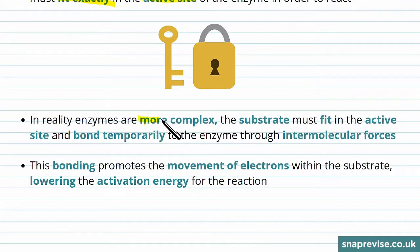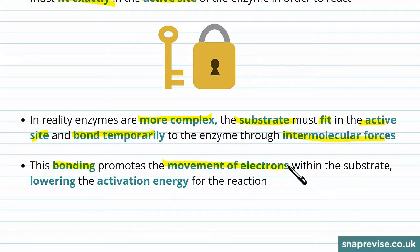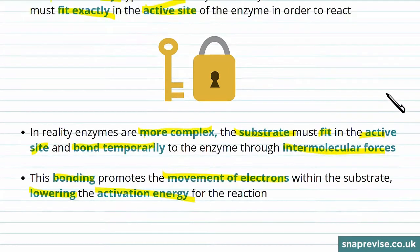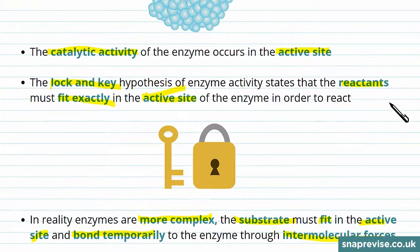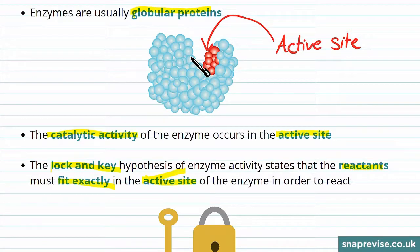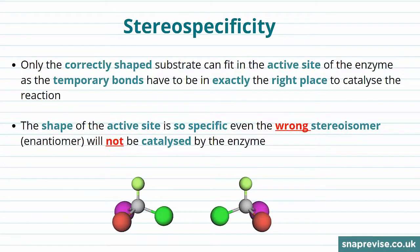In reality, however, enzymes are more complex than this. The substrate — the chemical being forced to react by the enzyme — fits into the active site and bonds temporarily with the enzyme through intermolecular forces. During this bonding, there's a movement of electrons within the substrate, and this lowers the activation energy for the reaction. So it's not just a case of fitting in and holding in place; the enzyme actually bonds to it and changes the structure of the reactant. Even if the lock and key model is not entirely correct, it's useful because it shows that only correctly shaped substrates will fit into the active site of an enzyme, due to the temporary bonds that form in reality.